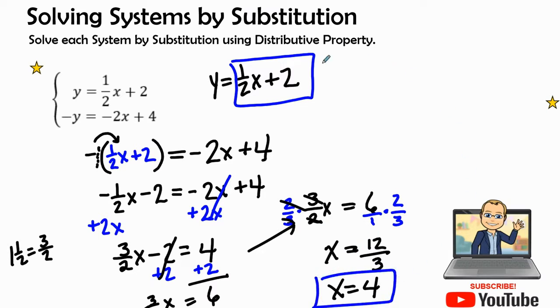So here we go, box to box. Let's put it back into the original problem. y equals 1 half, for x I'm going to put the value of 4, and then I'm going to add 2 at the end.